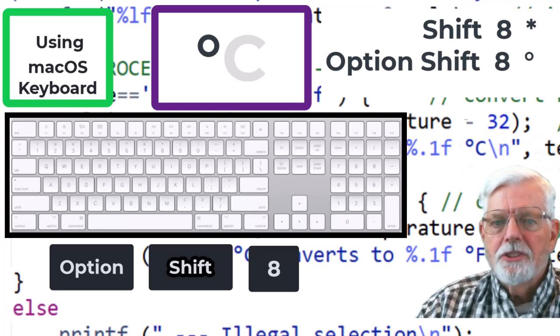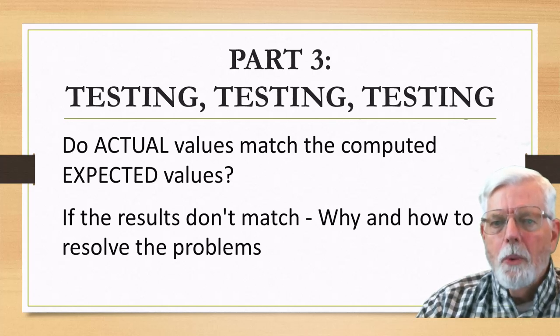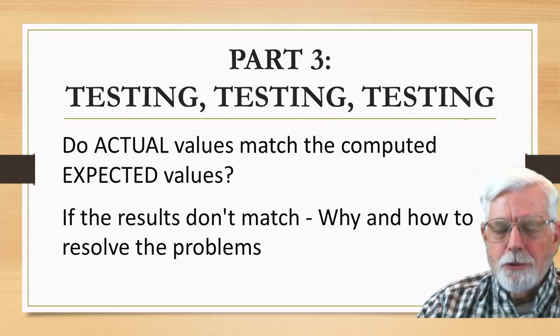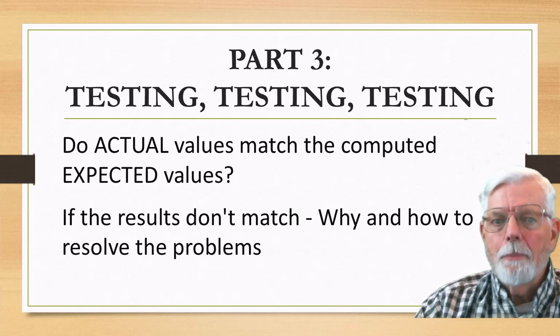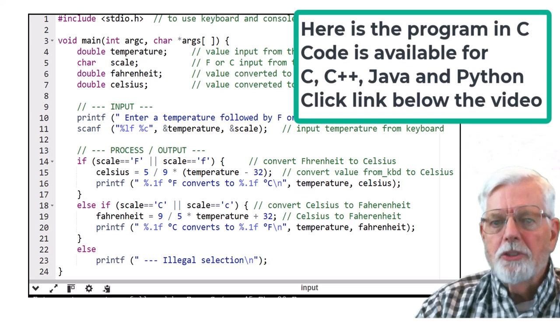In Part 3 of the discussion, we run the program and make sure its output matches the values computed with the calculator for the expected values. If the values don't match, we need to determine why this happened and then update the code to fix the errors. Let's see how the program works and if it produces the expected values. Fill in the table with the actual values. Run the program.